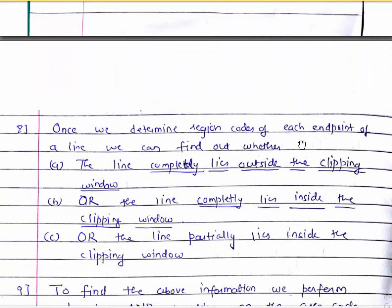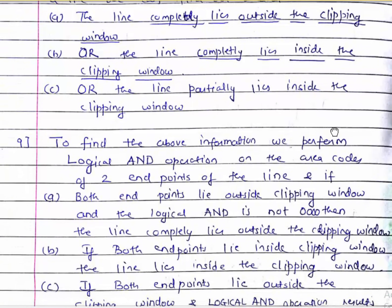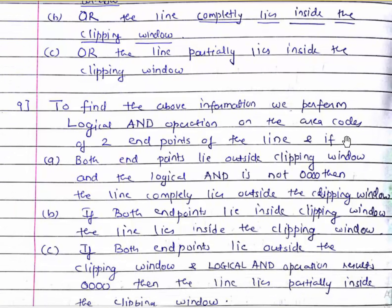Once we determine the region codes for each endpoint of a line, we can determine: whether the line completely lies outside the clipping window, completely inside, or partially inside. To find this, we perform a logical AND operation on the region codes of the two endpoints. If both endpoints lie outside and the logical AND is not 0000, then the line completely lies outside the window — we don't have to worry about it.